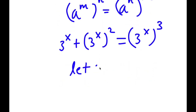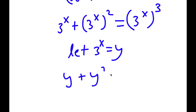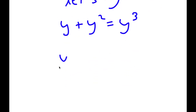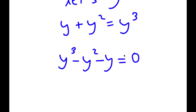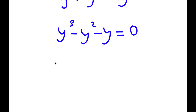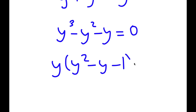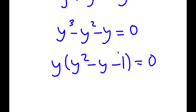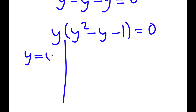Now I'm going to let 3 to the power of x equal y. So now I have y plus y squared is equal to y to the power of 3. This can be rewritten as y to the power of 3 minus y squared minus y is equal to 0. If I factor out y, I get y times y squared minus y minus 1 is equal to 0.